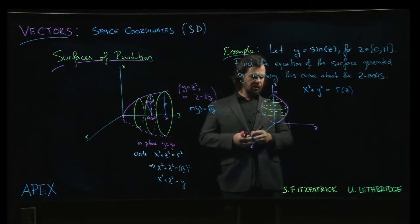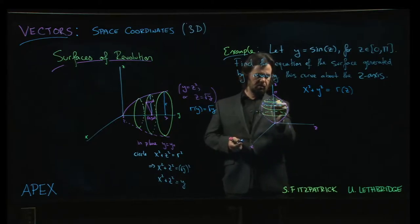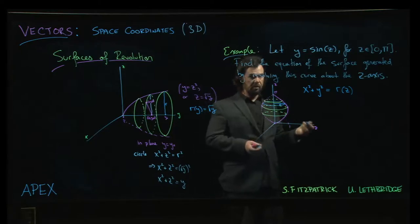So the radius is a function of z, and the radius is given by y. We can sort of see that at some point along there—there's the radius for one of these circles. Radius is y.